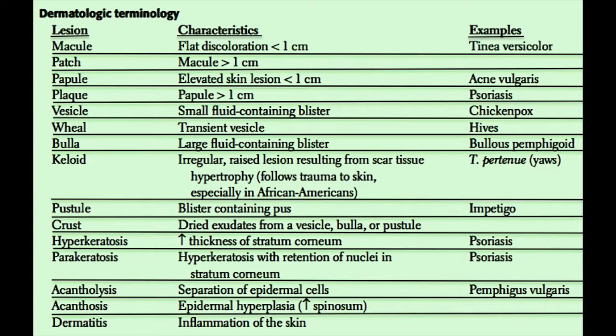If the lesion is raised — no longer flat but raised — and it's less than one centimeter, we call it a papule. If this same lesion is greater than one centimeter, we call it a plaque. So we have macules and patches if they're flat, and papules and plaques if they're elevated, with the difference being whether they're less than or greater than one centimeter. A common example of a papule would be acne vulgaris, and a common example of a plaque would be psoriasis.